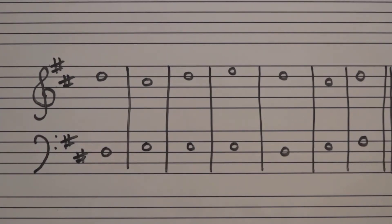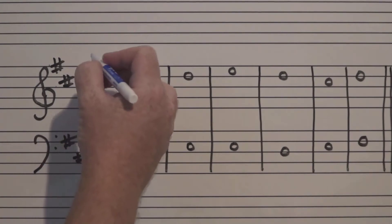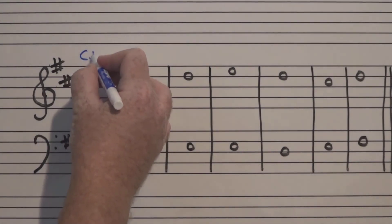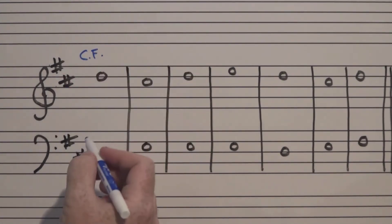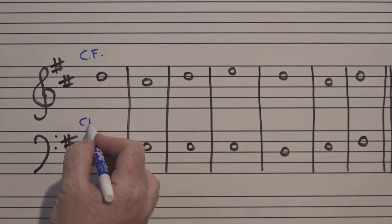On the second page of your assignment, you'll see what we call first species counterpoint, in which a composer would take a given Cantus firmus, so you might see that somewhere, and then add a counterpoint line.